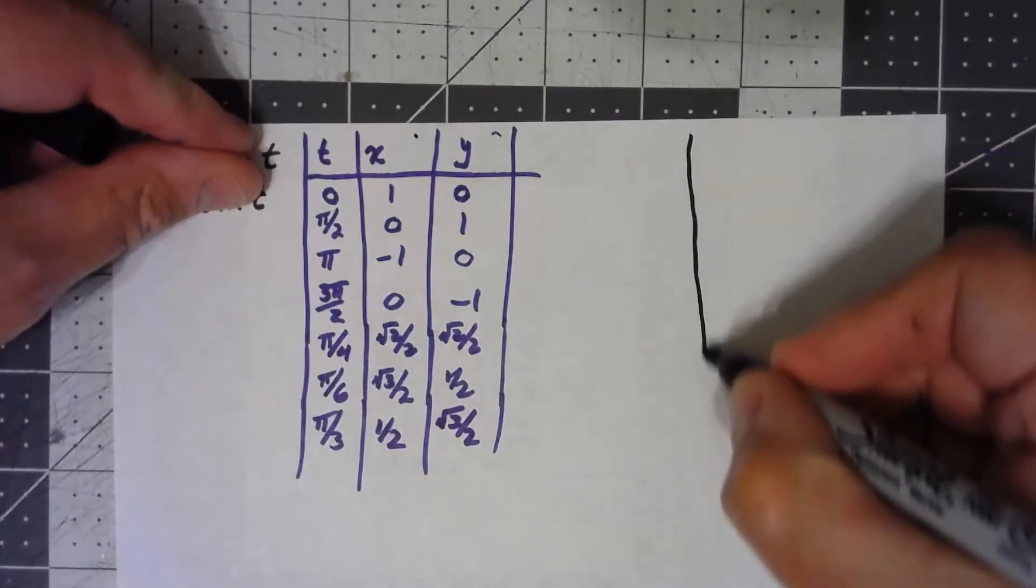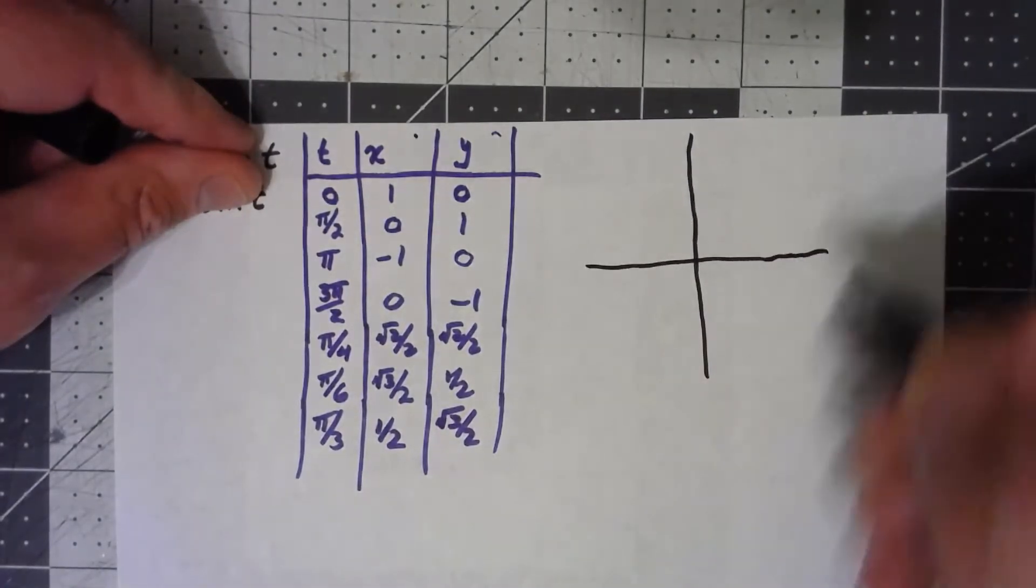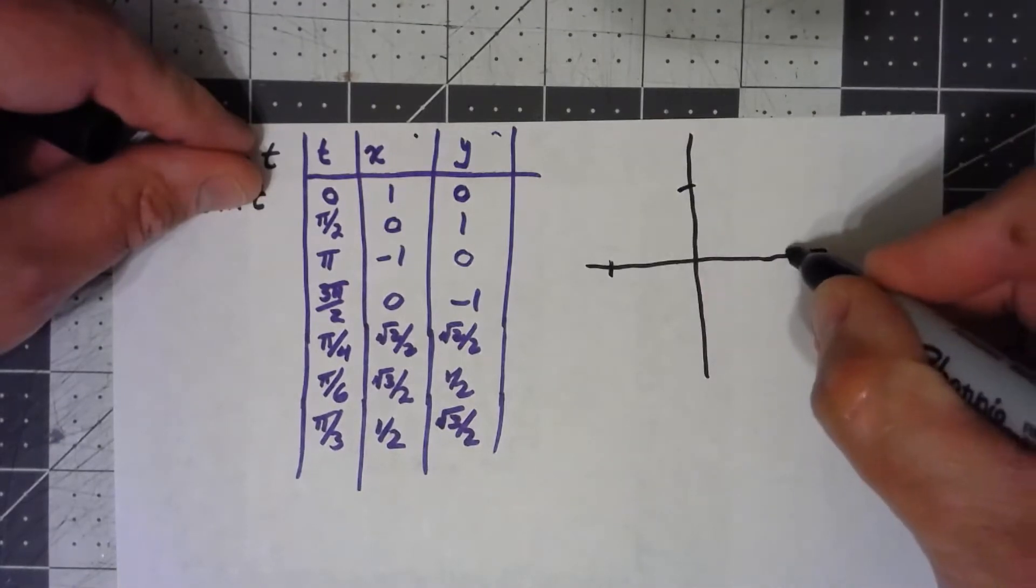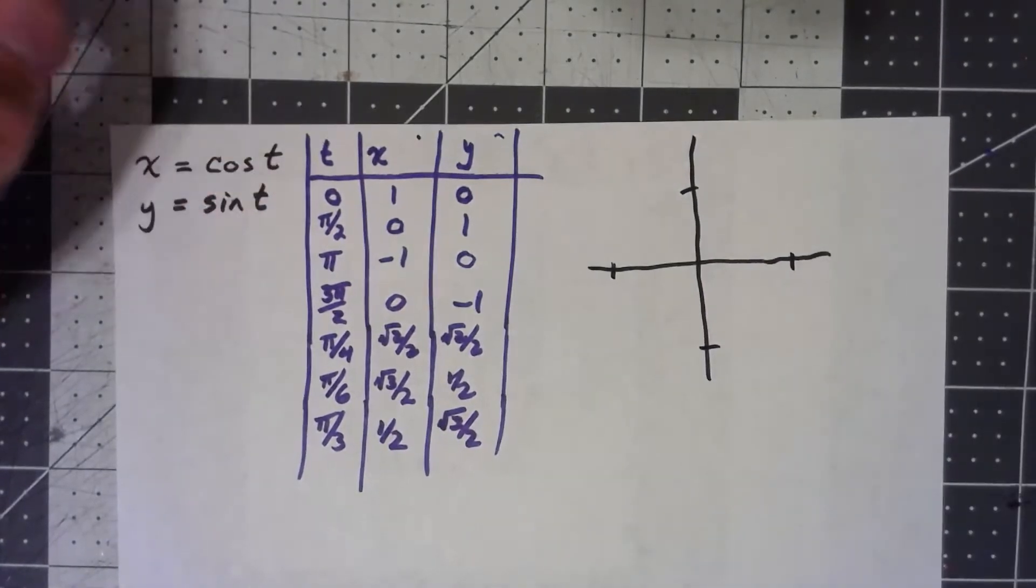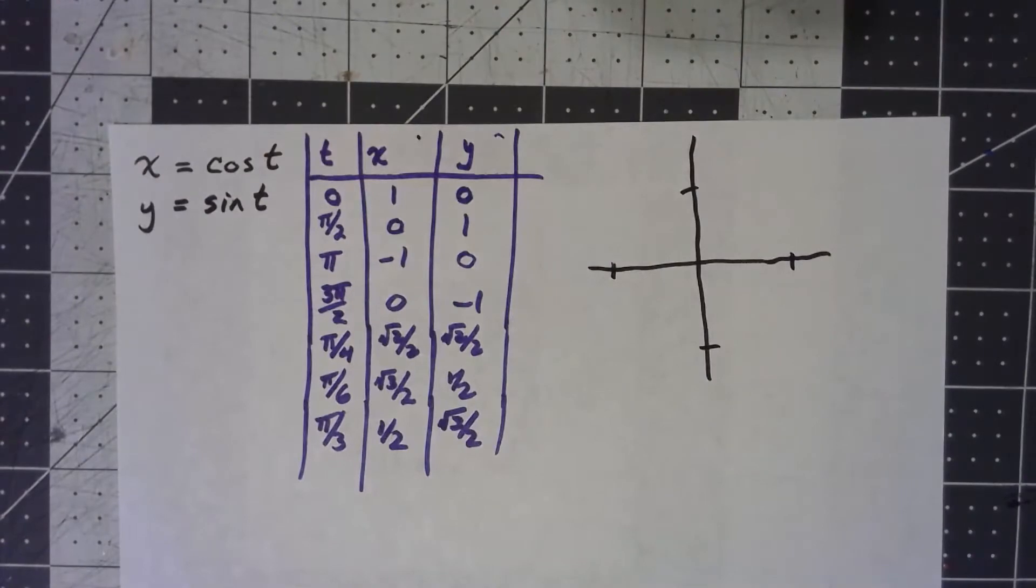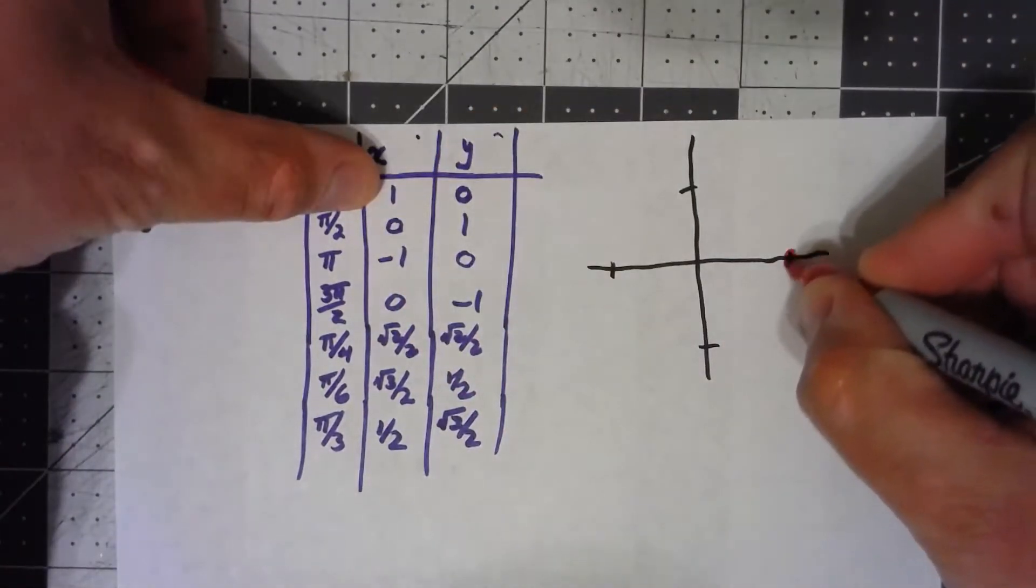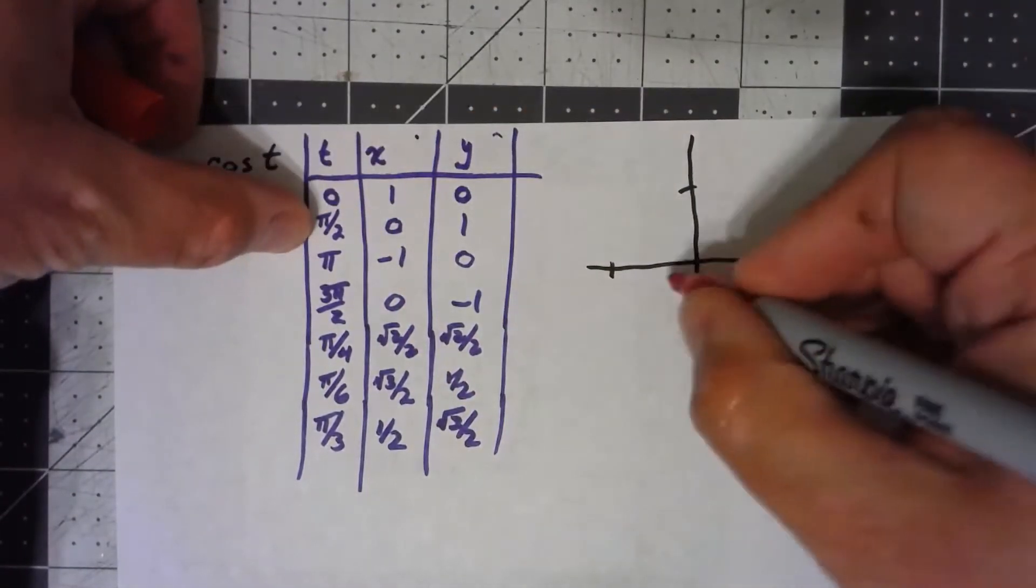I went ahead and created a bunch of values based on special angles. Everything's between negative 1 and 1, so let's go ahead and zoom in pretty far. When t is 0, I get 1, 0. At pi over 2, I get 0, 1.